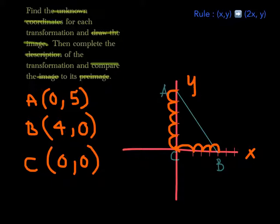Now that we know the unknown coordinates, we must draw the image. But before we can draw the image, we must know what the image is. So to find the image, we have to follow this rule and plug our A, B, and C coordinates into this formula.